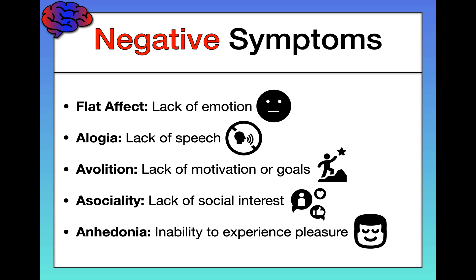And finally, anhedonia, which we've learned about before in regards to anxiety and mood disorders. Anhedonia is an inability to experience pleasure, even from things that normally would grant a person pleasure. I'll also mention that related to disorganized behavior, we sometimes see an extreme form known as catatonic behavior — minimal reactivity to your environment, such as holding a rigid posture for a very long period of time and not really interacting with anything outside yourself.